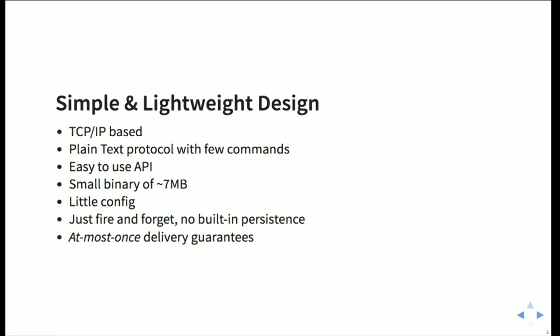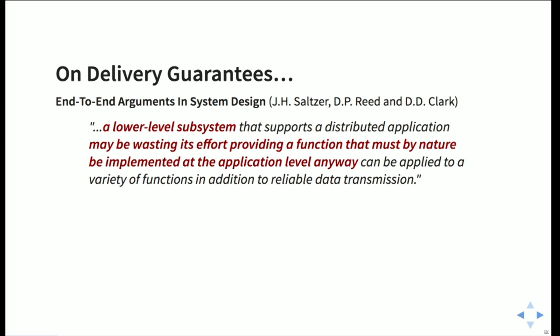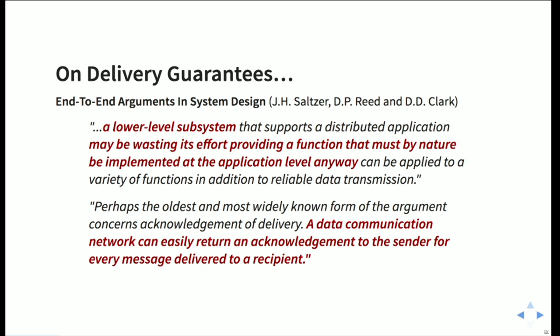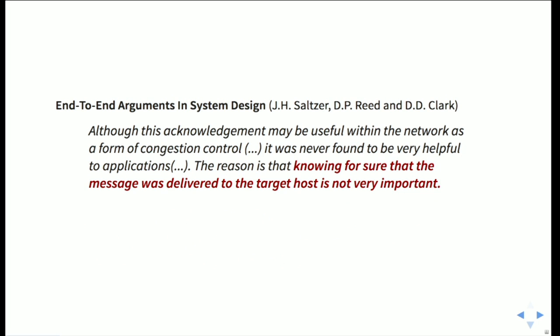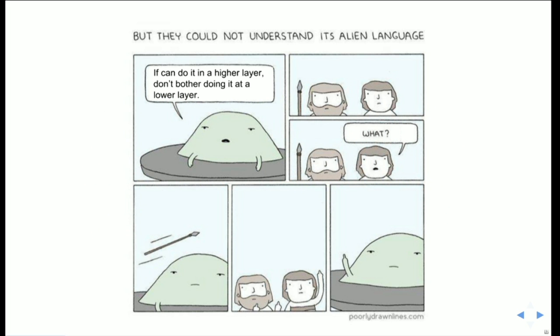This may sound like a limitation, but going back to the basics of the end-to-end arguments in system design — under the section on delivery guarantees — we can read that a lower-level subsystem may actually be wasting effort by providing a function that must, by nature, be implemented at the application level anyway. We can do acknowledgement of delivery for each message we send, but knowing the message was delivered to the target host is not very important — what we want to know is whether the target acted on the message. If you can do something at the application layer, just don't bother doing it at a lower layer.